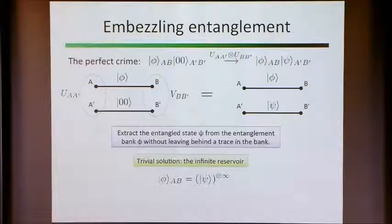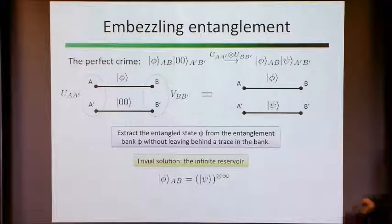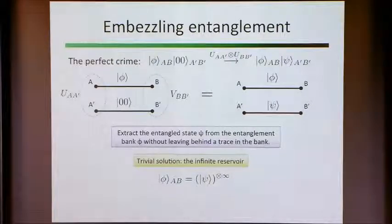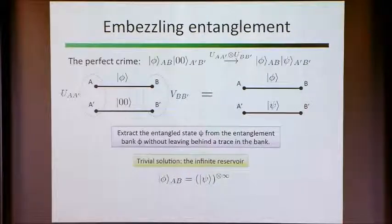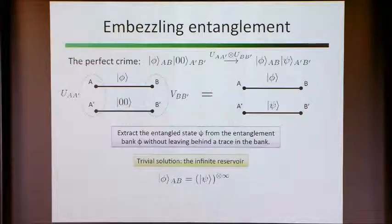There is a sense in which it can be done: a trivial solution is to have an infinite reservoir of entanglement. If you steal a dollar from a bank with infinite money, the bank still has infinite money. From a mathematical perspective you can formalize this rigorously, but the physical relevance is less clear, because in practice you never have access to an infinite number of degrees of freedom you can control effectively. So if we want to think about physical relevance, we should probably focus on finite-dimensional models.